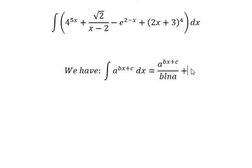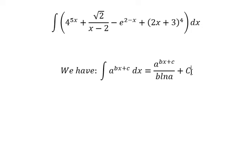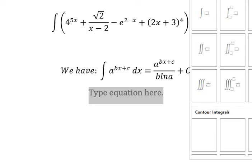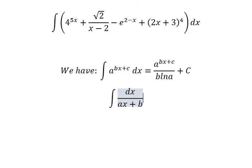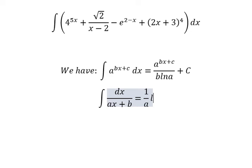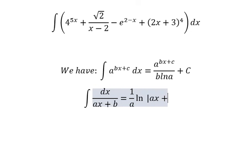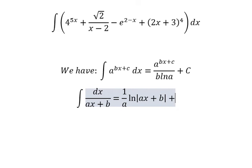The next formula: the integration of ds over (as + b) equals 1 over a times ln of the absolute value of (as + b), plus the constant C.